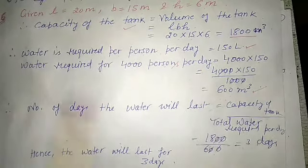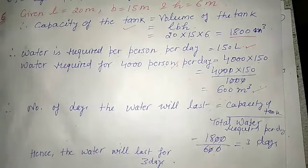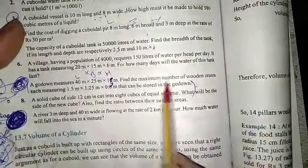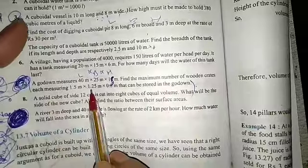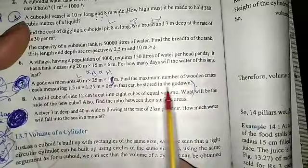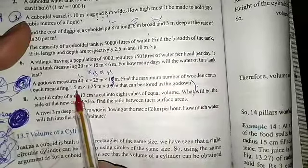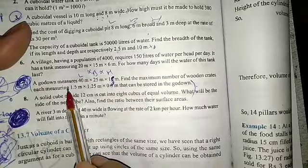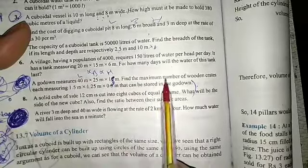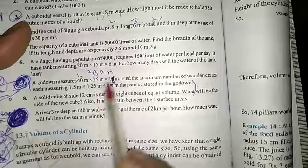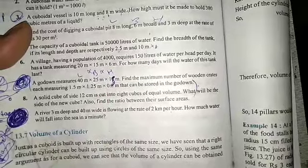The next question: a godown measures certain dimensions. Find the maximum number of wooden crates of given measurements that can be stored in it. We find the volume of the godown and the volume of one wooden crate, then divide the godown's volume by the crate's volume to get the maximum number of crates.